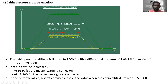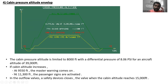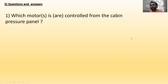The cabin pressure altitude envelope shows altitude versus time. The maximum normal cabin altitude is 8,000 feet. The cabin altitude warning triggers at 9,550 feet. Passenger signs warning activates at 11,300 feet. The outflow valve closes at 15,000 feet. Aircraft cruise altitude is 39,000 feet. The cabin pressure altitude is limited to 8,000 feet with a differential pressure of 8.06 PSI at 39,000 feet. At 9,550 feet the master warning comes on; at 11,300 feet the passenger signs are activated; and the outflow valve safety device closes the valve when cabin altitude reaches 15,000 feet.